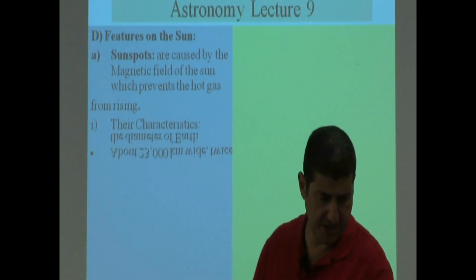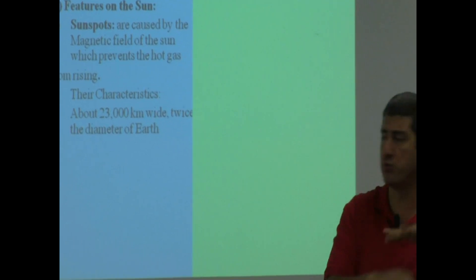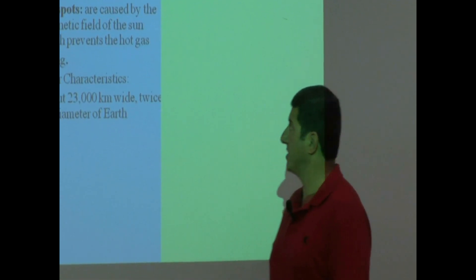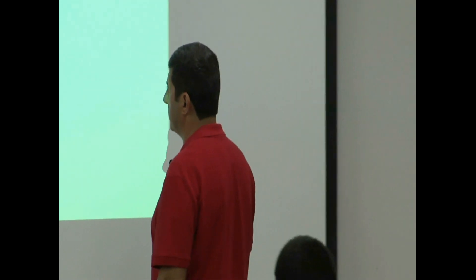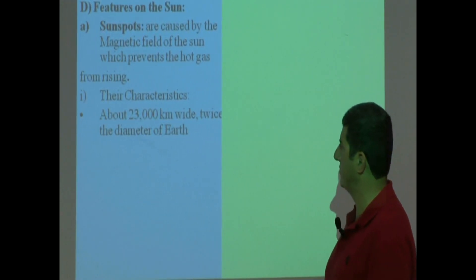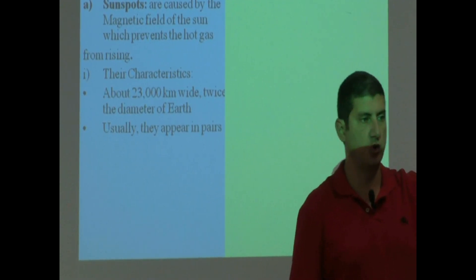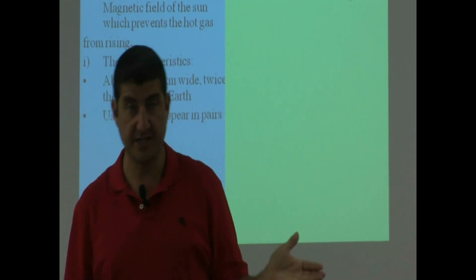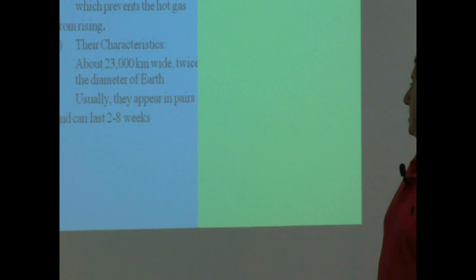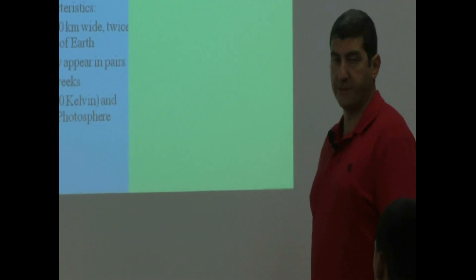Last time we got over here in the lecture, we were about to end lecture nine. We got to the last portion where we were talking about the features on the sun and we said sunspots and we talked about what causes sunspots and then we were talking about what are the characteristics of sunspots. We saw that they are about twice the diameter of the earth. Usually they appear in pairs like a North Pole and a South Pole or a South Pole and a North Pole because they are due to the magnetic field of the sun. They can last two to eight weeks, we mentioned. We said they are colder and darker than the photosphere.